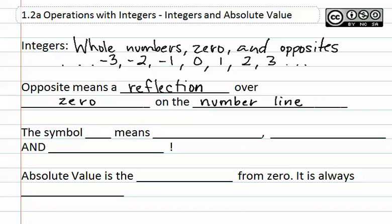If we looked at a number line and put zero in the center, and we were looking at the number two, and wanted to see its opposite, we would imagine that the zero is the center and look for the reflection on the other side. That reflection would be two in the opposite direction, or negative two.